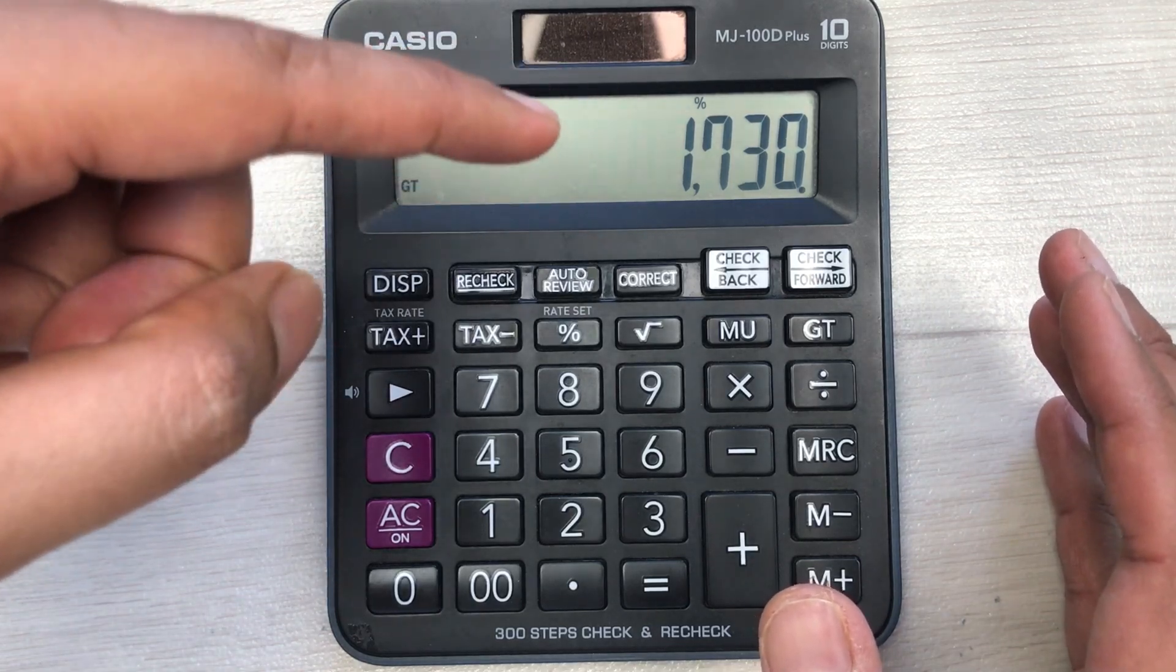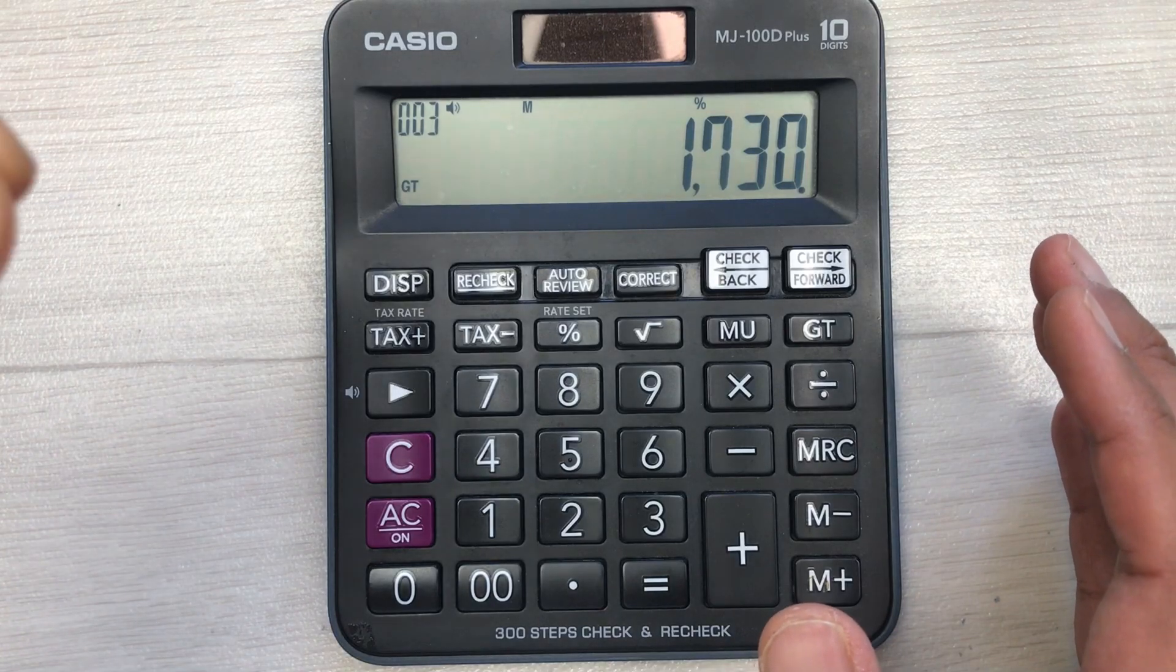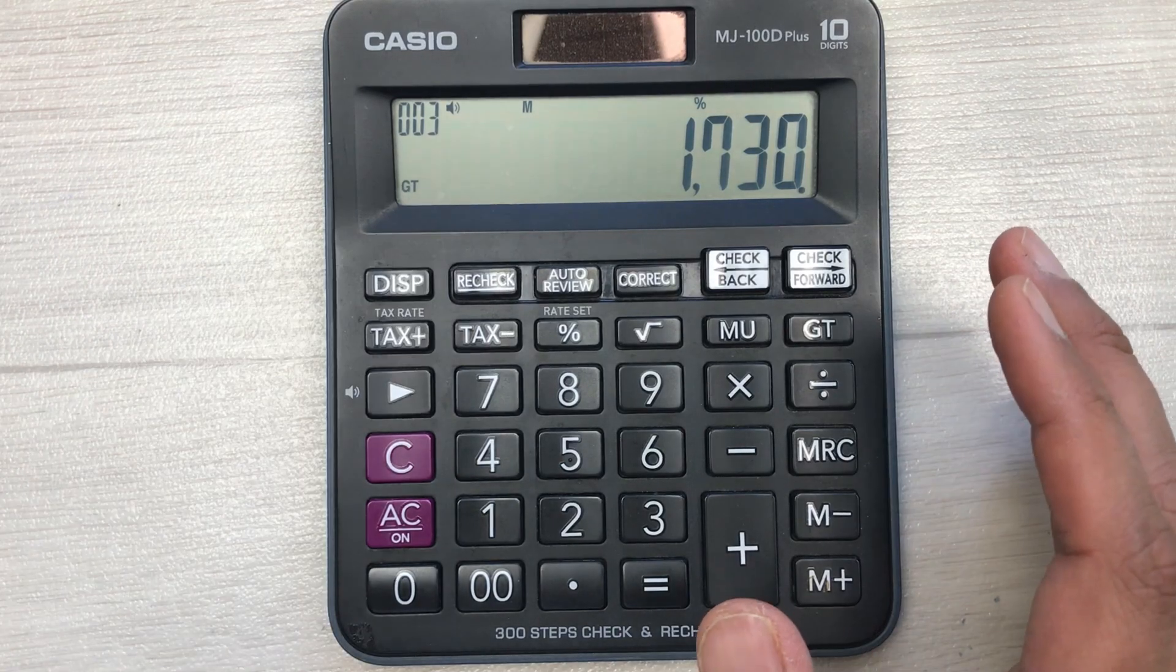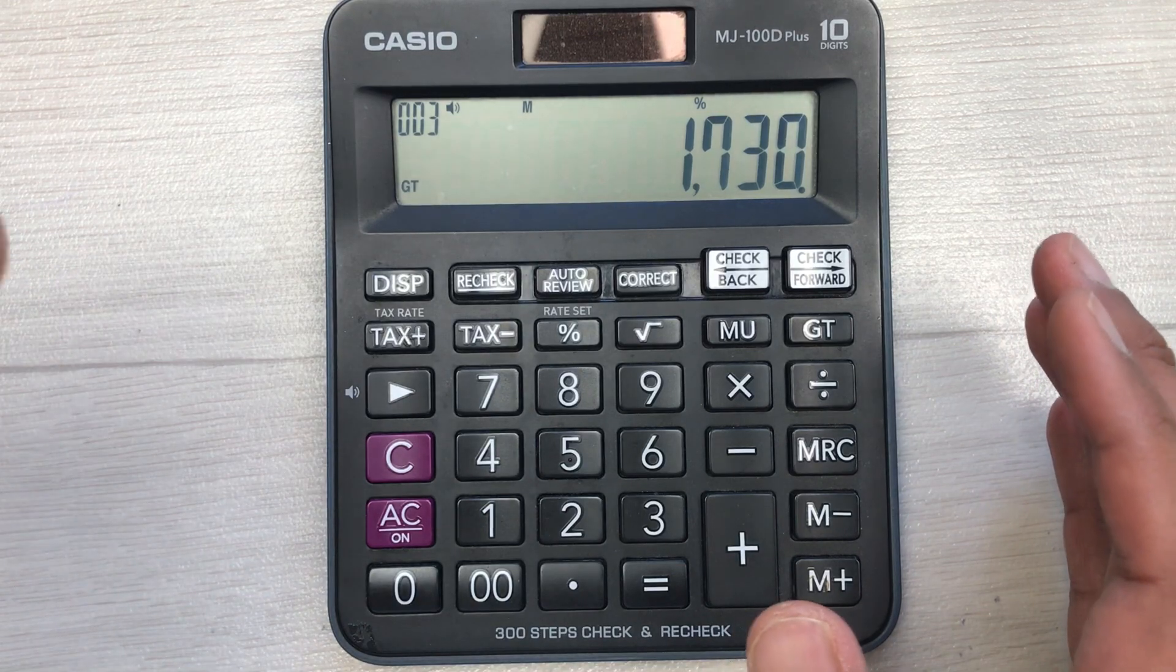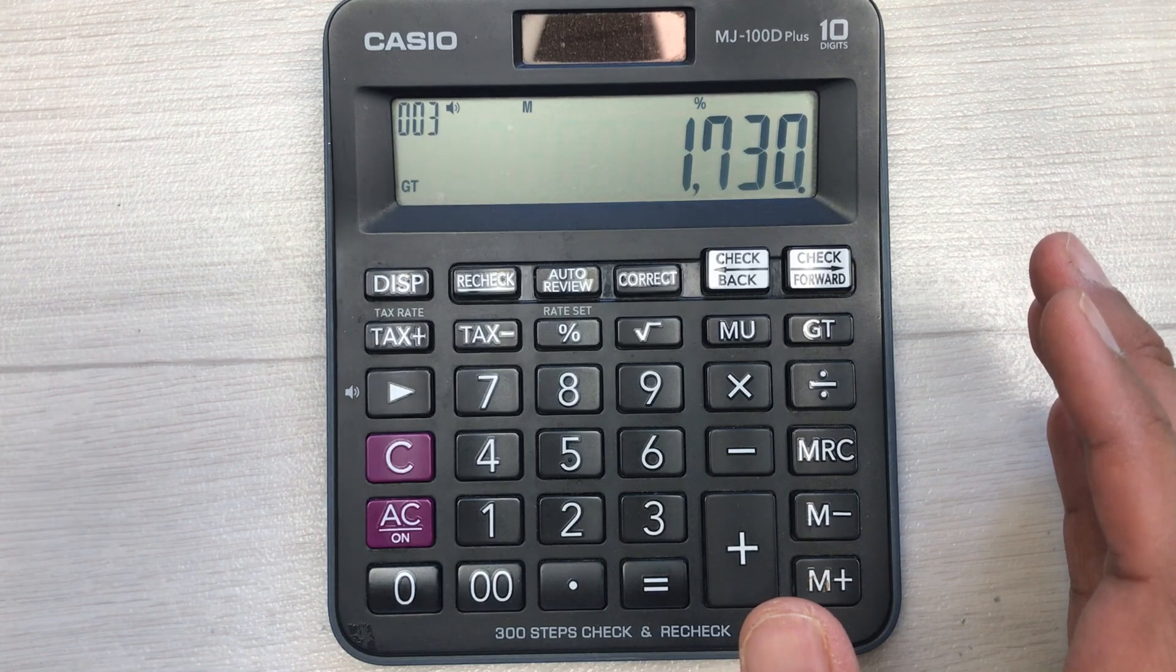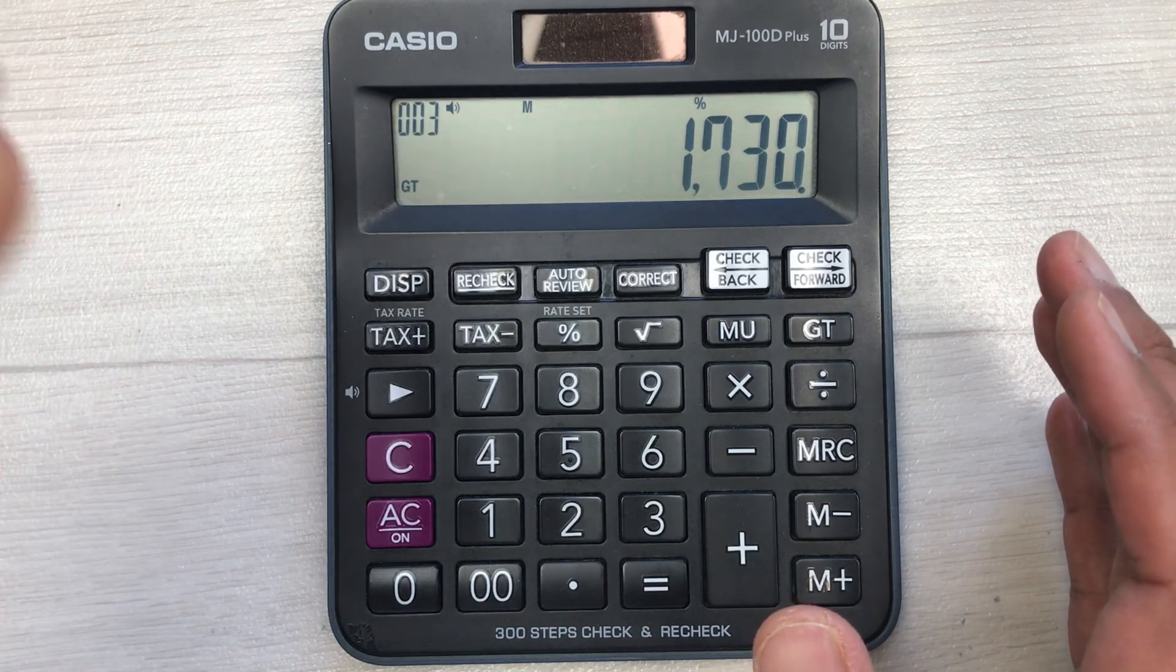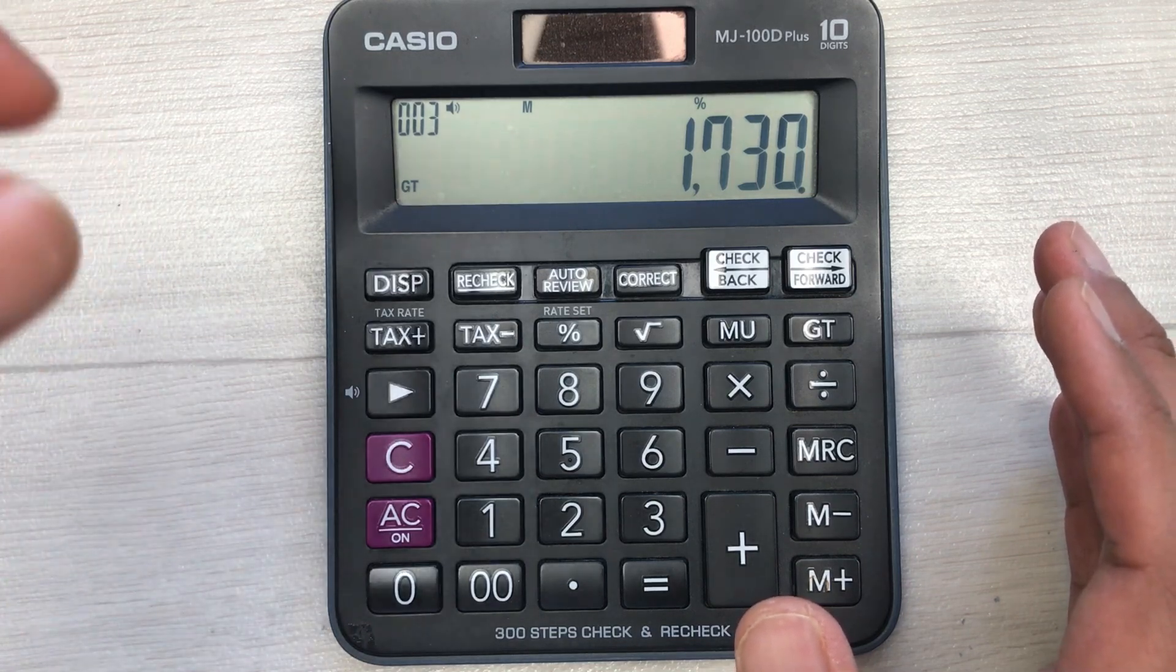Why do I multiply it with 25%? The total percentage is always 100, and we want 75% discount, so 100 minus 75 equals 25. That is why I multiply it with 25% to get our final answer.